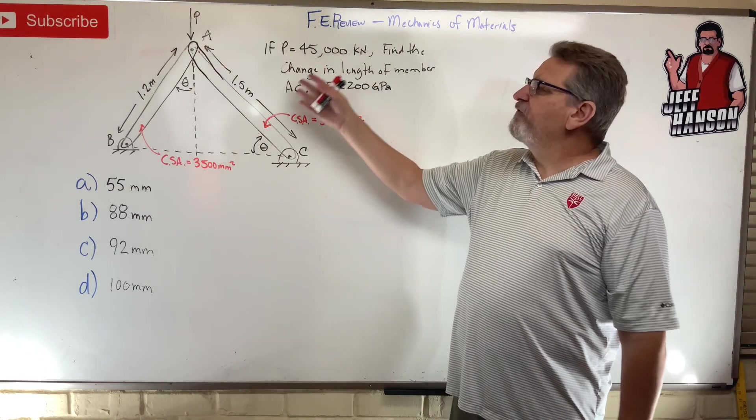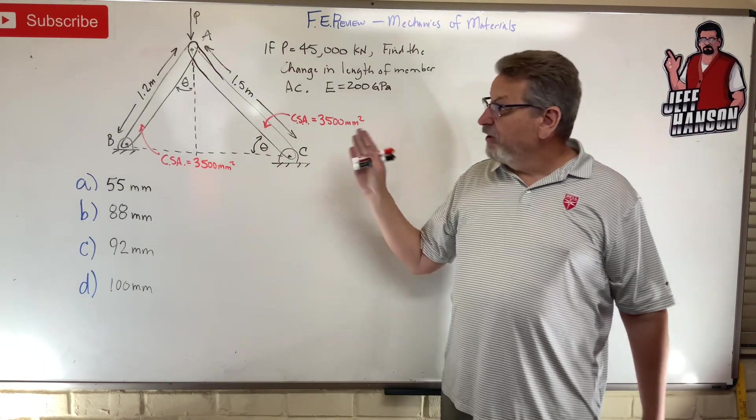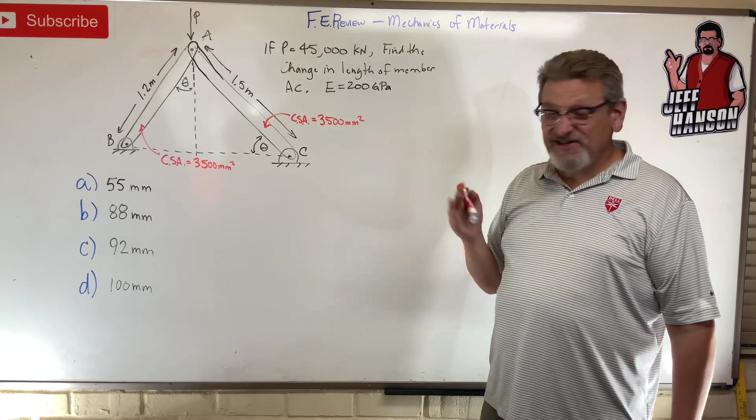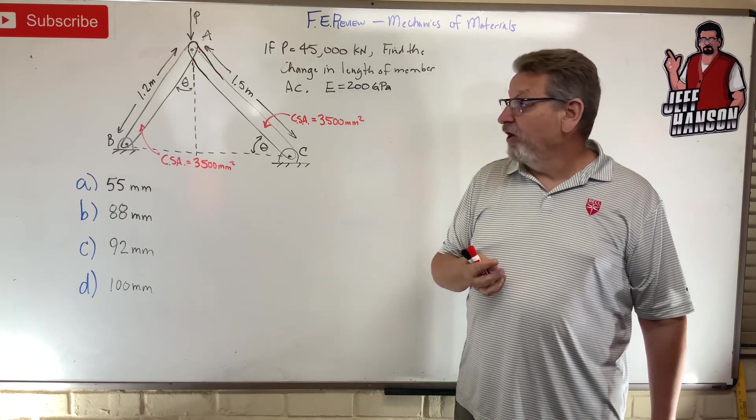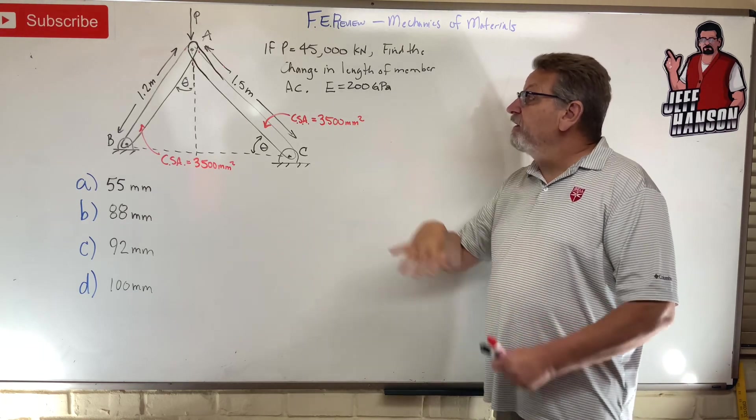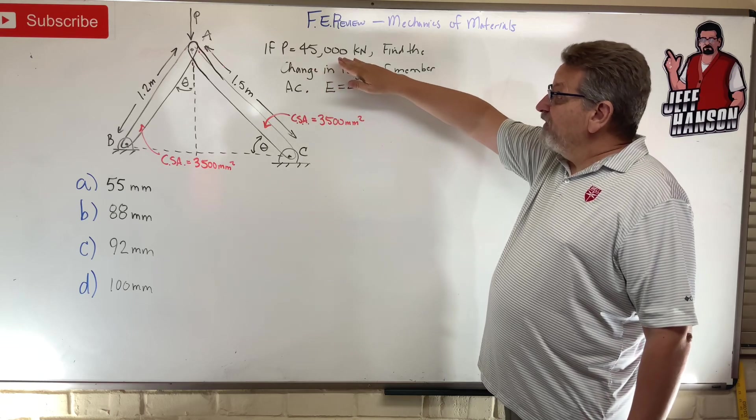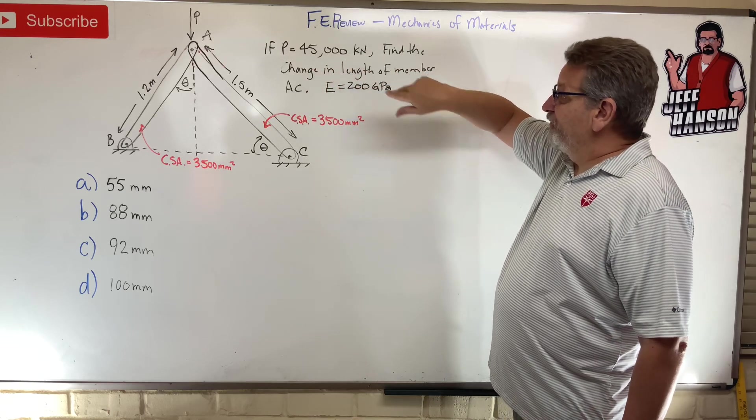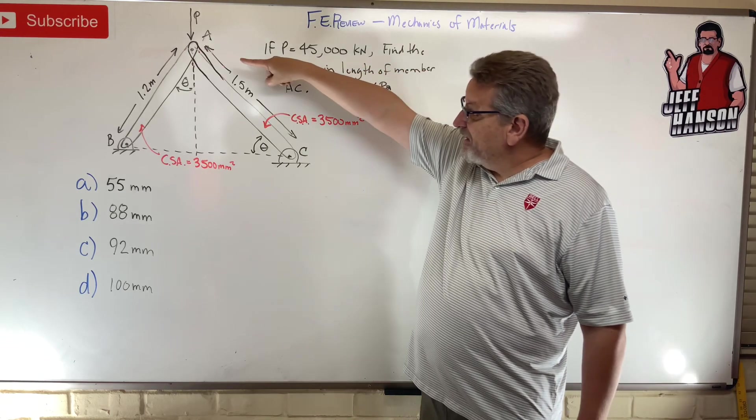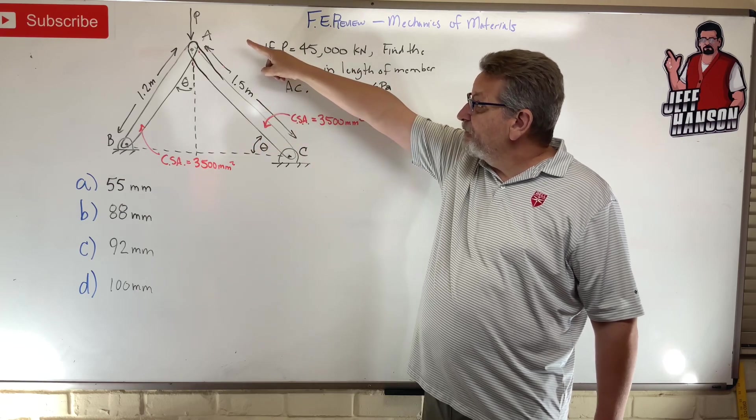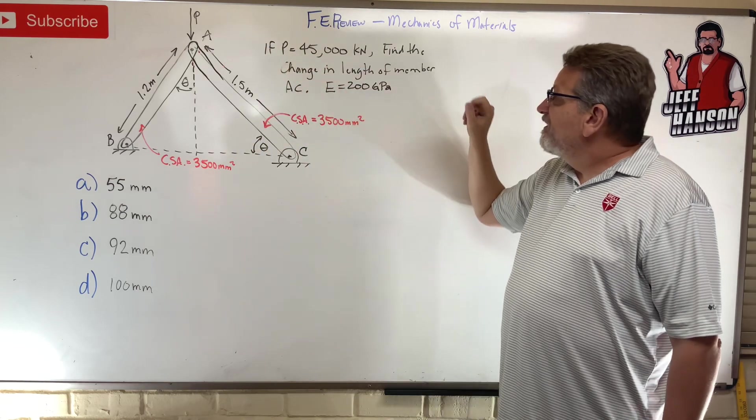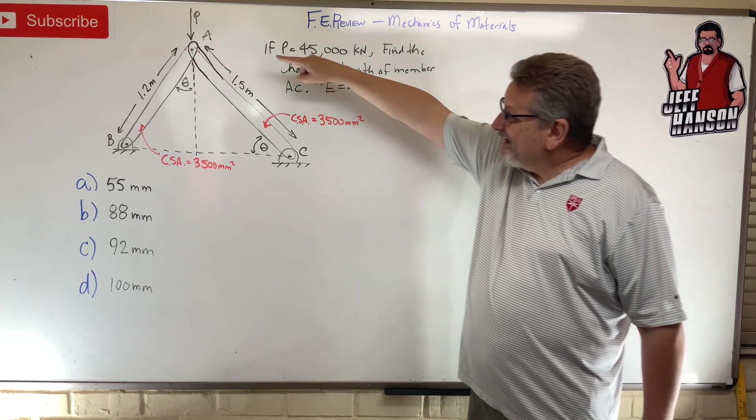Hey friends, welcome back. FE review, mechanics of materials. We got a little problem here. I think this is the hardest problem that we've done so far, so a good little challenge for you. If P equals 45,000 kilonewtons, now look, this thing is pin connected, pin connected, pin connected. Well, there's the P right up AC.